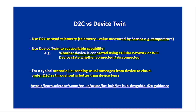For example, consider IoT fire panel devices. If a fire is detected on a particular floor of a building, we should use D2C. We could use device twin, but this is normal telemetry and the frequency of sending such messages is likely high, so D2C is appropriate. Whether it's cellular or Wi-Fi, or whether a device is connected or disconnected — those are not normal telemetry messages and are better suited for device twin.